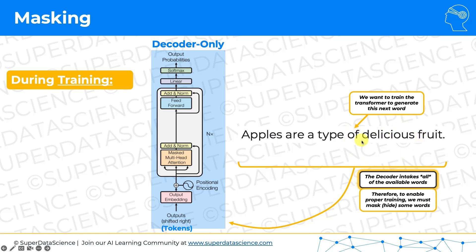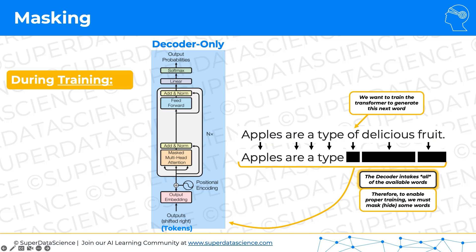So we have to somehow hide these future words so that the transformer can't cheat. That's where masking comes in. Even though the whole sentence is put into the transformer, in this specific training step we're going to hide the future words with masking, and masking is going to happen in the multi-head attention part.